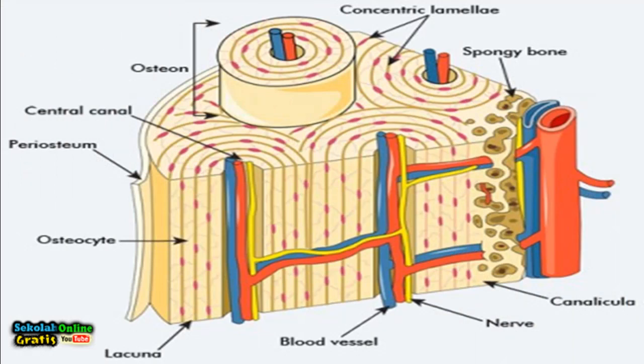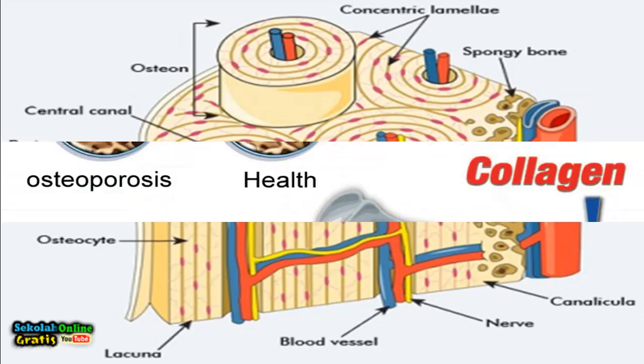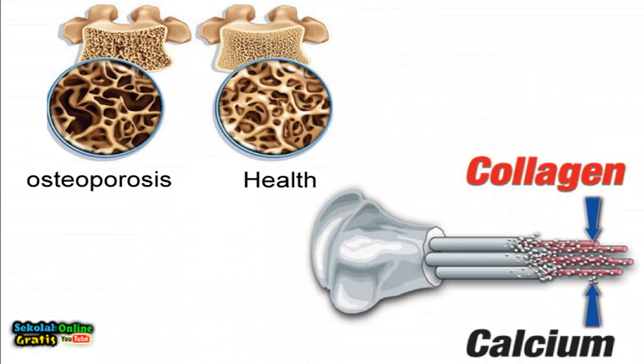Inorganic substances consist of calcium phosphate Ca3(PO4)2 and bicarbonate ions HCO3 to form a hydroxyapatite compound Ca10(PO4)6(OH)2. These compounds function as hardeners, stiffeners and bone reinforcement.